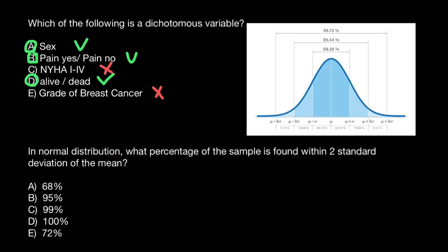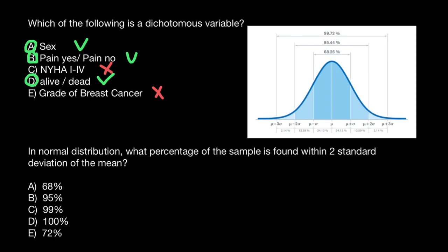Take a look at this picture. Within one standard deviation from the mean, we can find 68.25% of the data. Within two standard deviations, we can find 95.44% of the data.